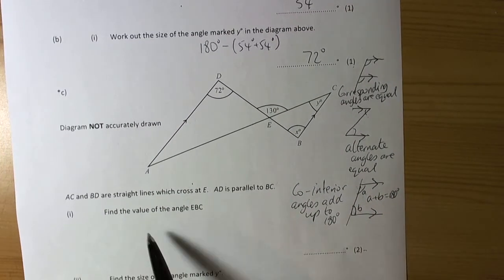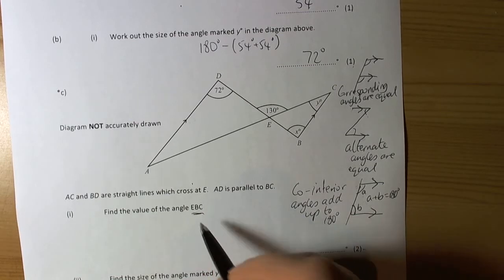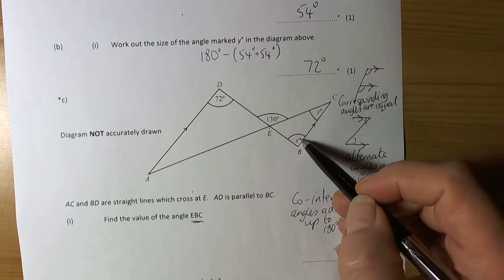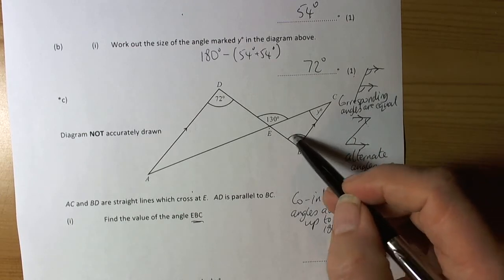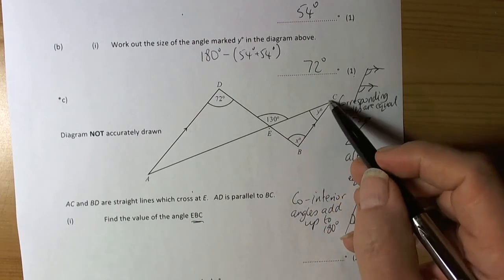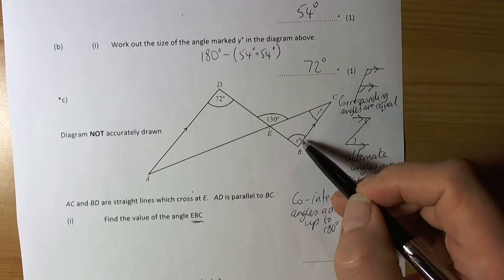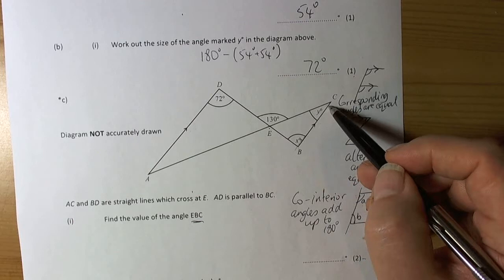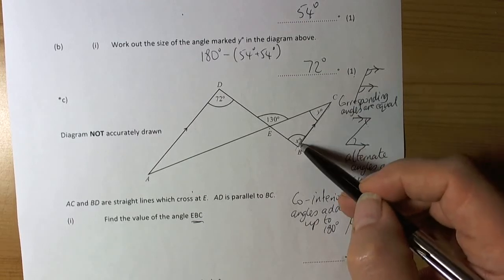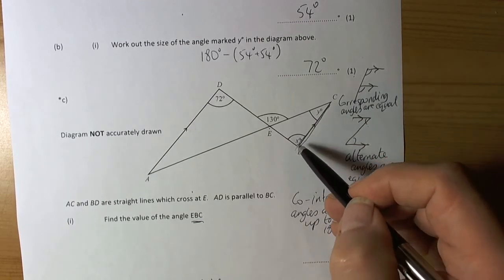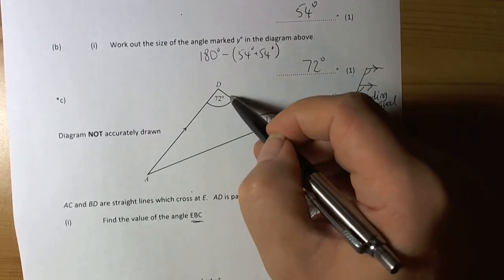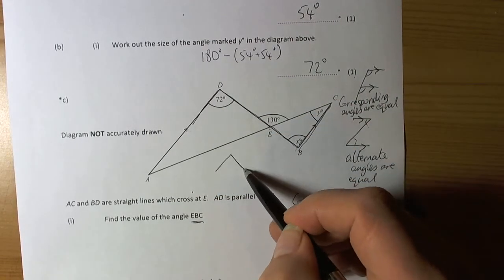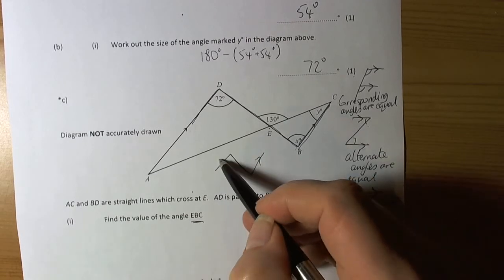So we go through the question. So it wants to find the value of the angle EBC. So we follow the letters round, EBC, and there is the angle trapped in the lines EB and BC. So the left of this angle here. Well, if we follow, because there is a parallel side there, if we follow this round, and keep following it round, then what we can see is that we have created the Z picture.